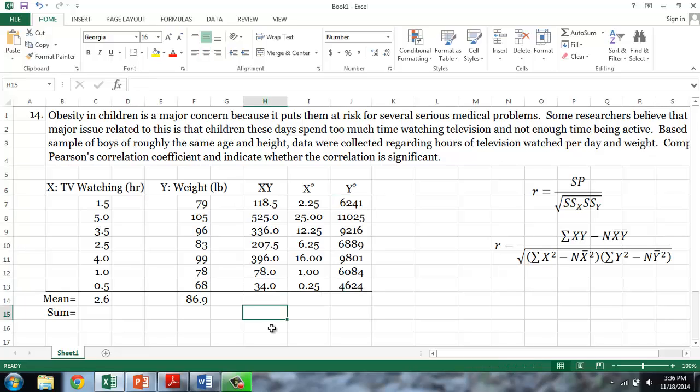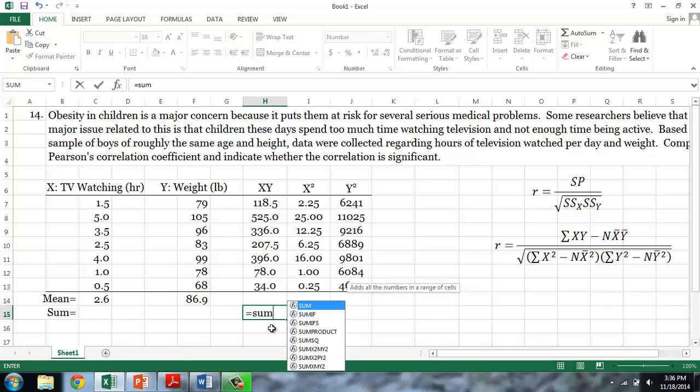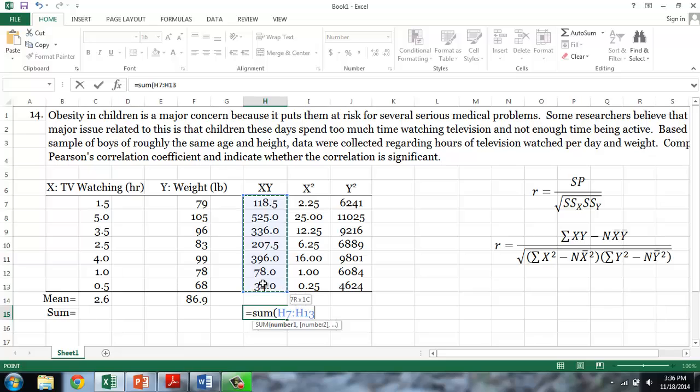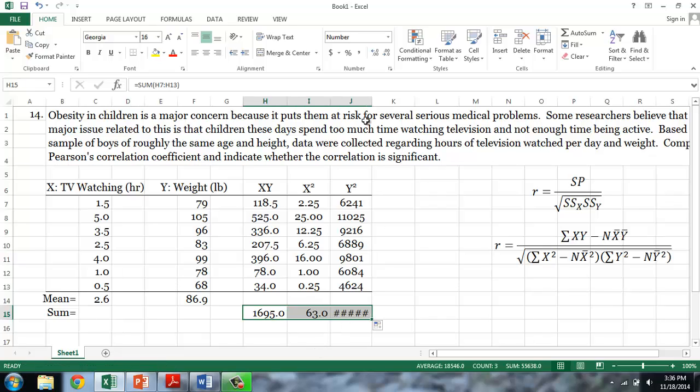Now, as before, I will sum each of these columns. This is equal to sum, parentheses, and select the column, close parentheses. And I can copy this into the remaining two cells.